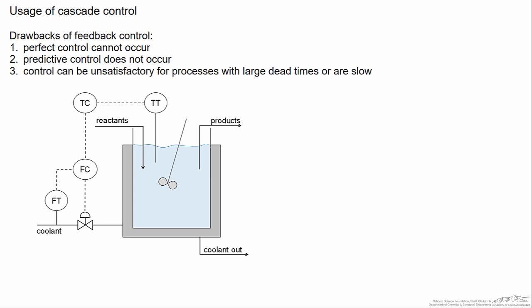Before we do this we have to think about why we would want cascade control. The majority of all processes that are being controlled take advantage of feedback only control because of the numerous advantages that it provides: its robustness, its ability to measure the controlled variable and act, its ease of implementation, etc.